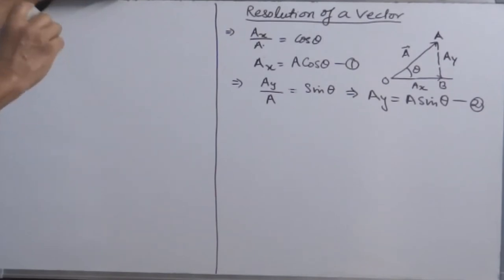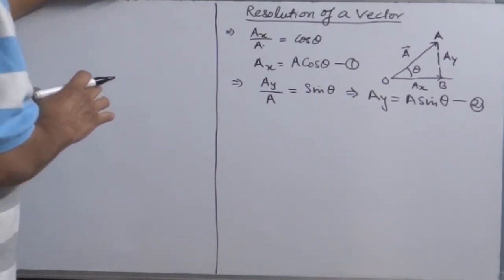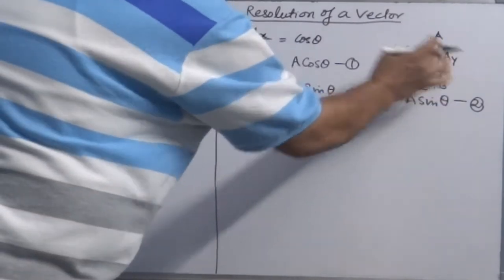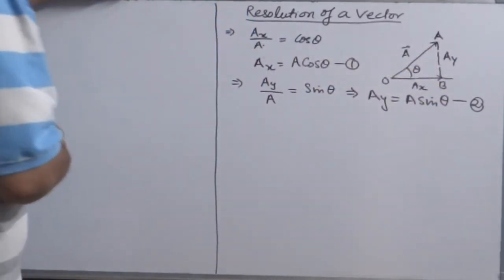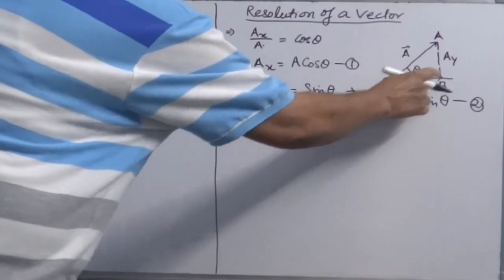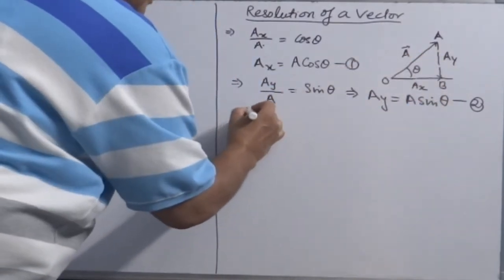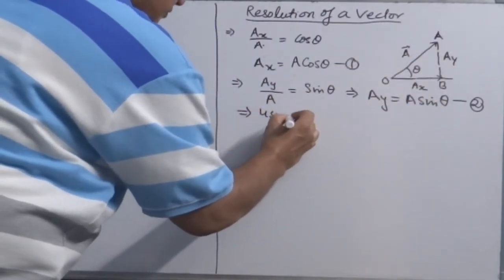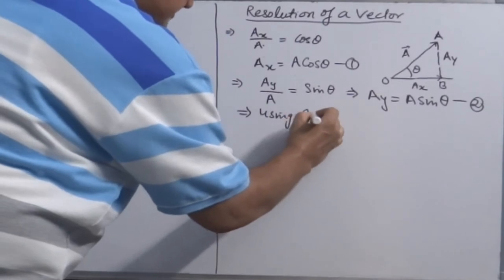And since Ax and Ay are the part of vector A, we must obtain by adding Ax and Ay a resultant vector A. Now, since Ax and Ay are at right angle, if you use Pythagoras theorem.